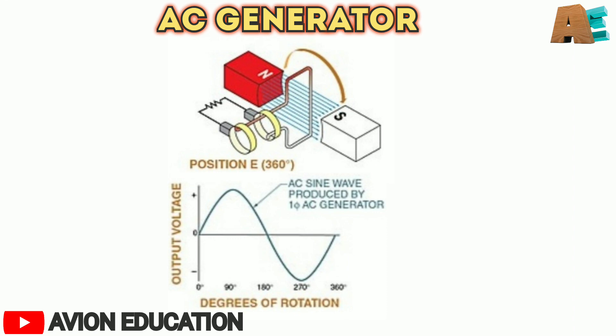Examining the sine wave, we see that voltage is zero when the loop is in the vertical position and maximum when the loop is in the horizontal position. As the loop continues to turn, voltage is maximum at 90 degrees, zero at 180 degrees, again maximum at 270 degrees, and zero at 360 degrees.